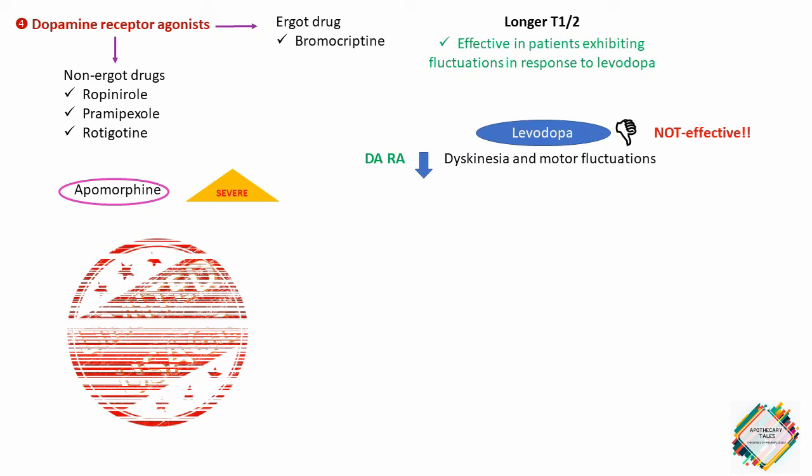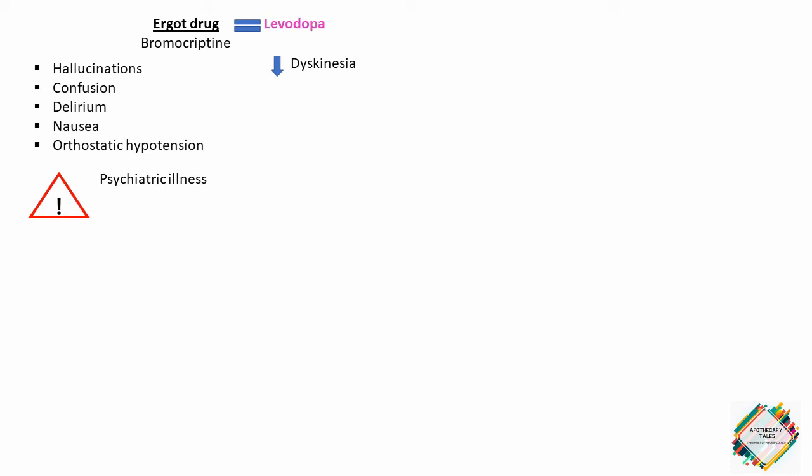The actions of bromocriptine, this ergot derivative, are similar to those of levodopa except that hallucinations, confusion, delirium, nausea and orthostatic hypertension are more common, whereas dyskinesia is less prominent. In psychiatric illness, bromocriptine may cause the mental condition to worsen. It should be used with caution in patients with a history of myocardial infarction or peripheral vascular disease. Because bromocriptine is an ergot derivative, it has the potential to cause pulmonary and retroperitoneal fibrosis.